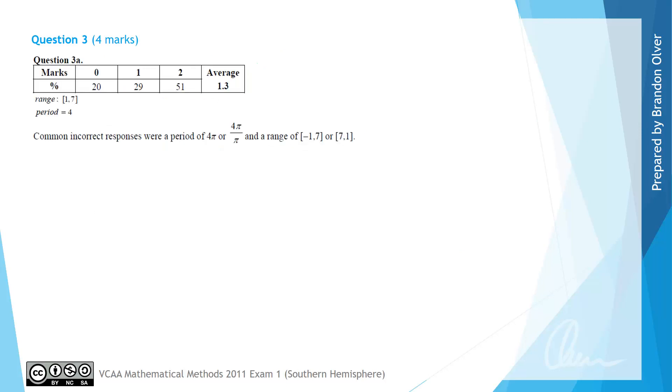From the examiner's report we can see that 51% of students got full marks for this question. Common incorrect responses were a period of 4 pi or 4 pi over pi, and the range was sometimes misquoted as negative 1 to 7 or students got 7 and 1 which is correct but quoted them the wrong way around. Remember that domains and ranges both have to have the smallest most negative numbers as the first number and then the largest or most positive numbers as the second number inside the brackets.